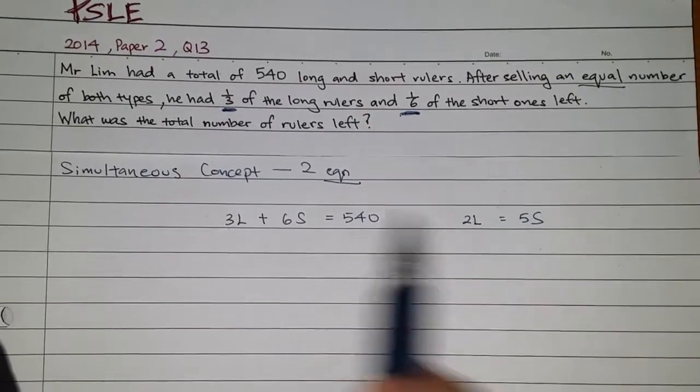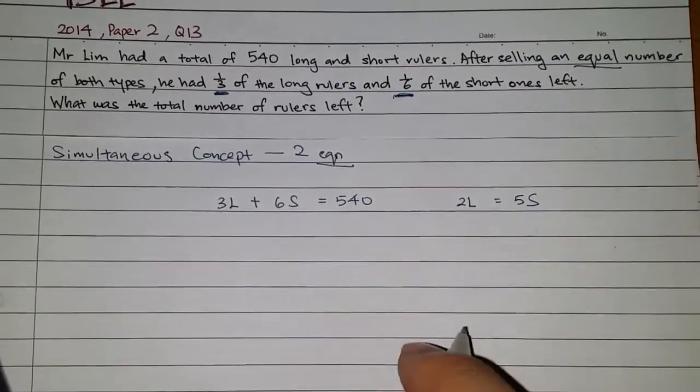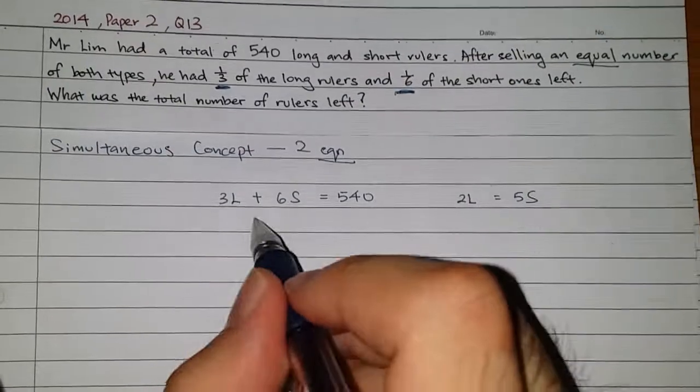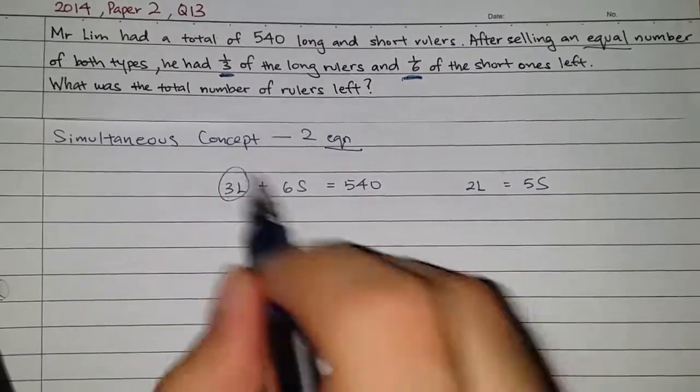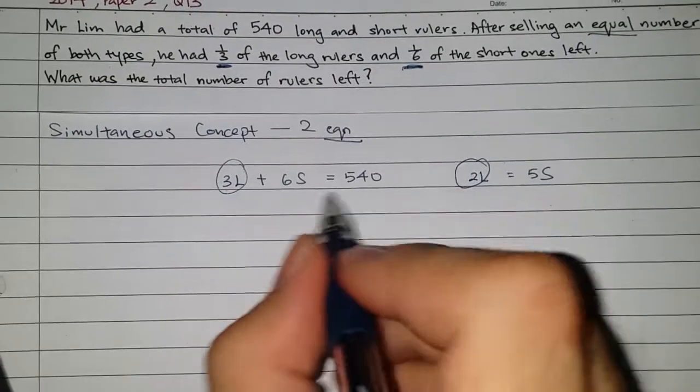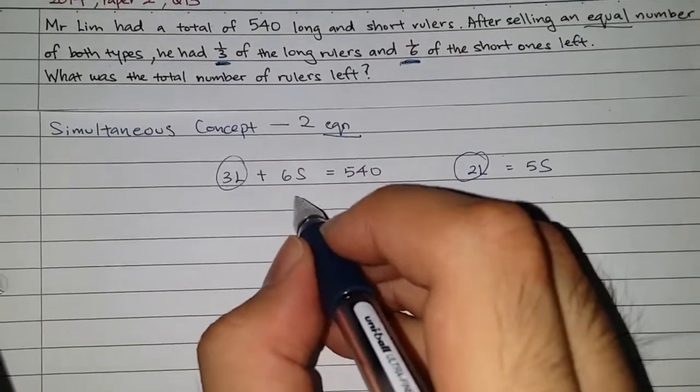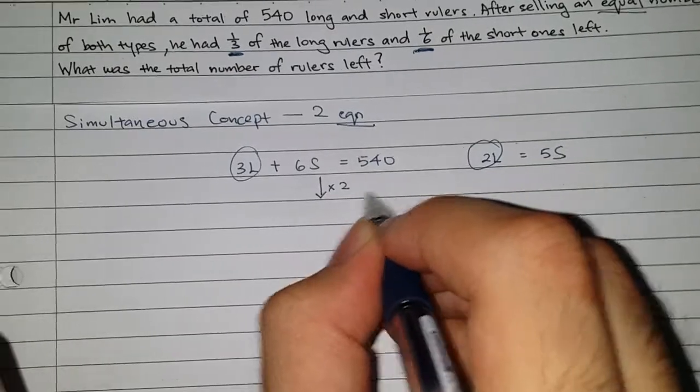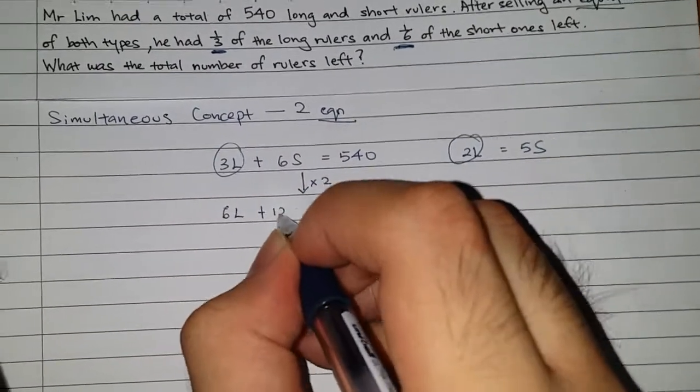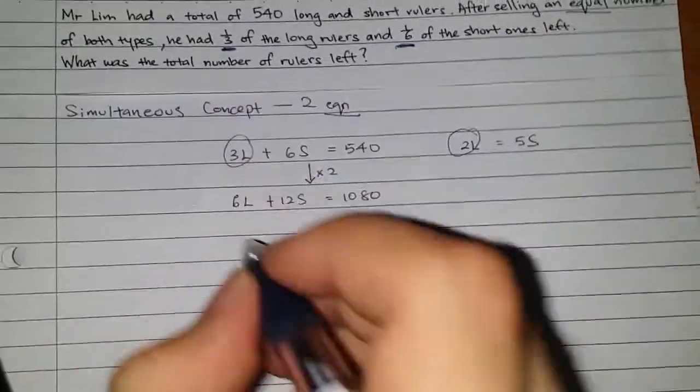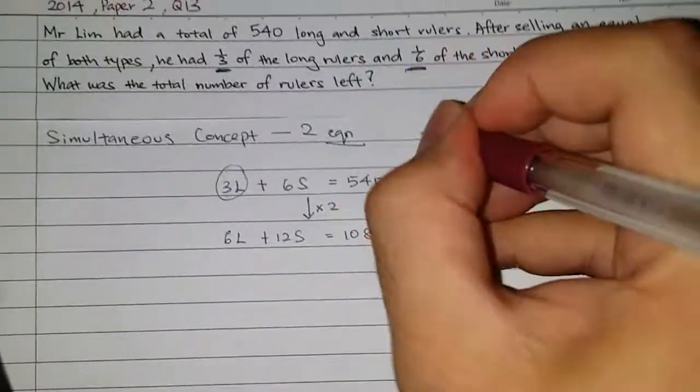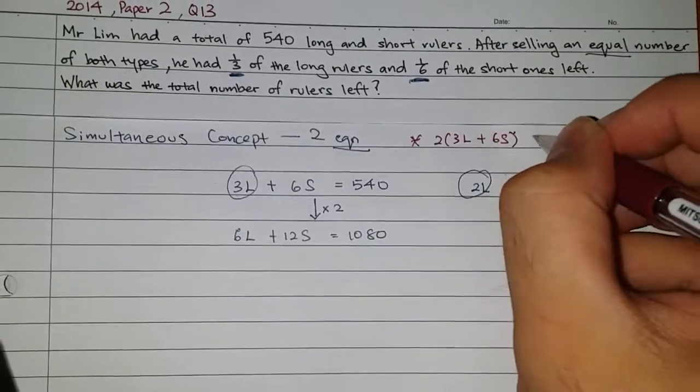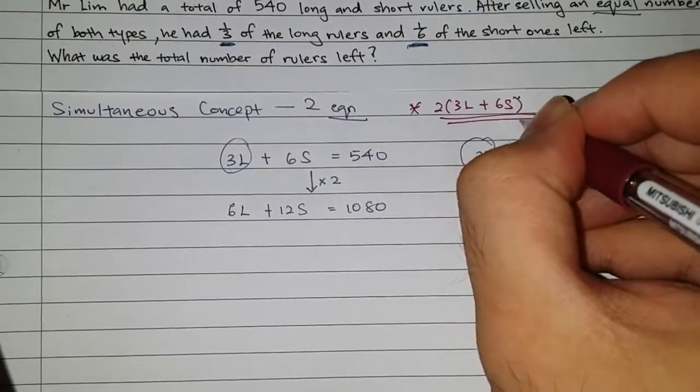So now, what we're going to do is we need to sub in the value or eliminate. So simultaneous makes use of that, either substitute or eliminate. So how do we do this question? Is that what should we make the same? I think we should make the long the same. So be careful because children haven't learned how to expand or factorize. So, I would do this to show it much better. I times this whole equation by 2. So it will be 6L plus 12S is equals to 1080. Please take note that this is secondary level. P6 haven't learned how to expand this. They do not know that.